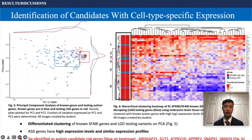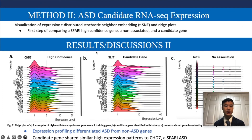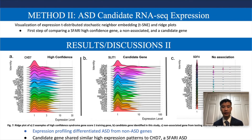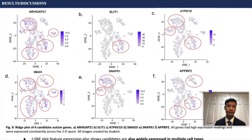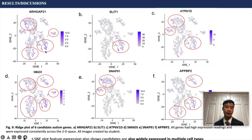Six genes were identified as potential autism candidate-rich genes, labeled in blue on the heat map: ARHGAP21, SLIT1, ATP6D, APPBP2, SNAP91, and SMAD5. Visualizing expression through T-distributed stochastic neighbor embedding and ridge plots, CHD7, a high-confidence gene, and SLIT1, one candidate gene identified in the study, shared similar expression profiling. However, SDF4, a non-associated gene, had little to no expression. All six candidate genes had high expression in greater than 10 cell types, with ARHGAP21, SLIT1, and ATP6D consistently showing 10-fold higher expression compared to the average gene. A similar trend was seen on the TSNE plots, where the candidate genes were widely expressed across multiple cell types, represented in their red regions.